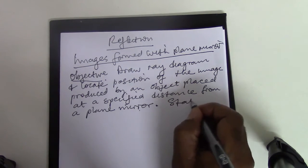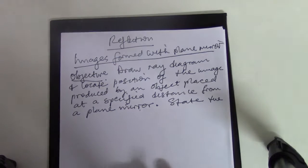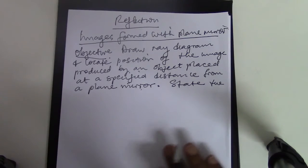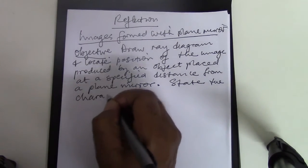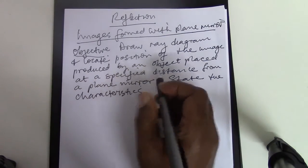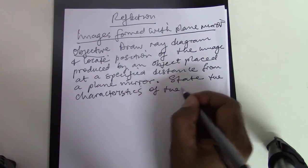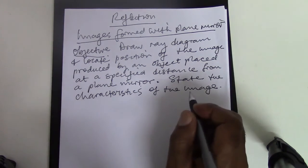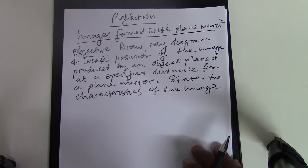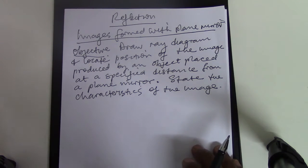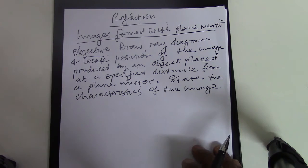Now, state the characteristics of the image — two things. You must be able to draw a ray diagram to locate the image position for an object at a specified distance from the mirror. Then you must also characterize the image.